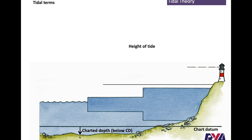Height of tide is the height from chart datum to the water surface. So the depth where you're sailing will be the charted depth plus the height of tide above chart datum.